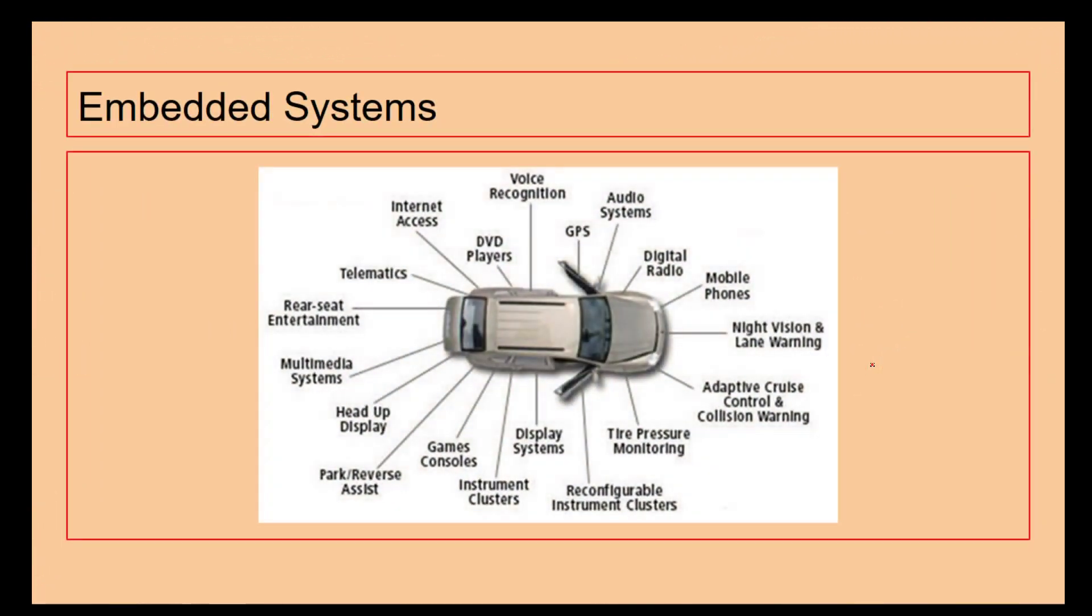The last area we're looking at today are embedded systems. I've got here a picture of a car and you can see dotted around it are different embedded systems that are in it. What is an embedded system? An embedded system is a system which is designed for one specific purpose. For example, if we're looking at this car, there is one system in this car which is responsible for voice recognition. That is what that system's job is. If the voice recognition embedded system breaks, are we going to buy a brand new car? No, we're going to replace the voice recognition unit.